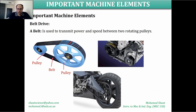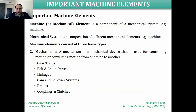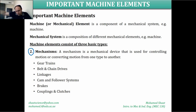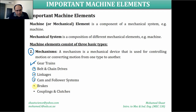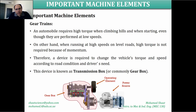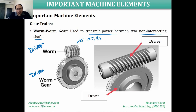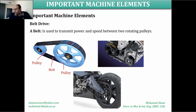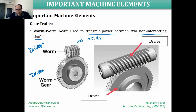Now we will move to belt and chain drives. We are discussing the second group of mechanical components — mechanisms that are moving themselves, like gears. We will now move to the other components: belts, chains, linkages, cams, brakes, clutches, and couplings. Belt and chain drives do the same thing as gears — they are used for transmitting power and motion between two rotating shafts.